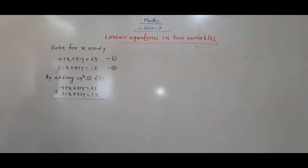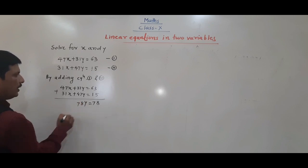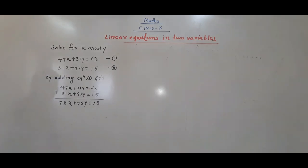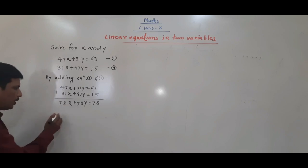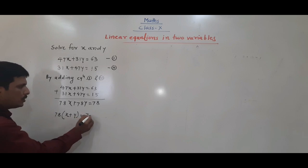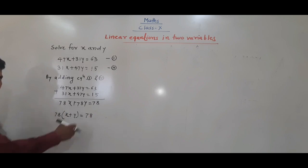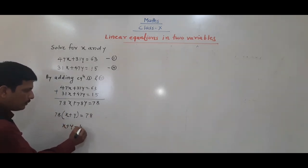If you add these, we get 78x + 78y = 113. From the whole equation we can take 78 common: 78(x + y) = 113. Dividing both sides by 78, we get x + y = 1. This is the third equation.